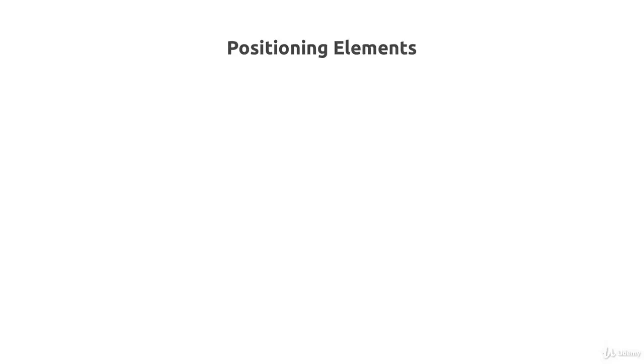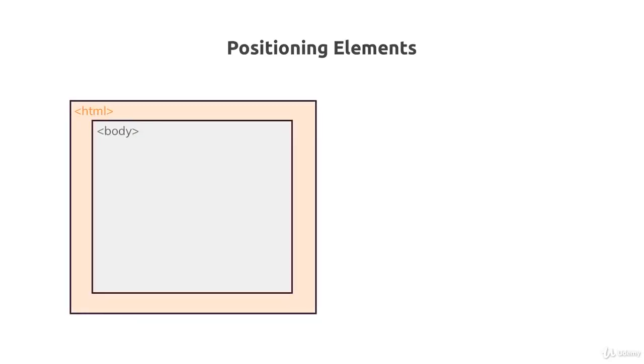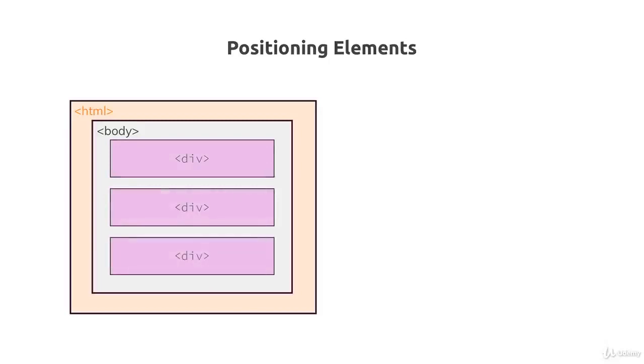Why do we have to position our elements, or how did it work so far? To understand this, we can imagine HTML and body elements, and inside this body element we have three divs - three block level elements. As we know, the general behavior of these block level elements is displayed right here, occupying the entire space available in the row where they are positioned and being displayed one after another.